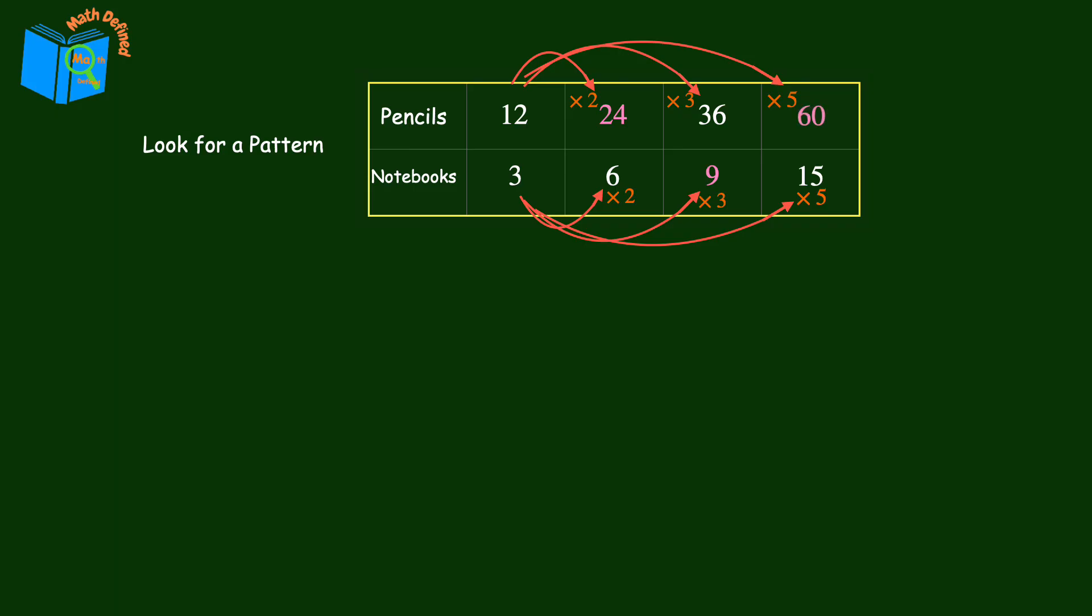The pattern in this table was pretty easy to see, but sometimes looking for a pattern can be confusing and frustrating. When this happens, you have another option. You can find the value of the ratio. Ratios are a comparison of two quantities using division. So to find the value of any ratio, you just divide the first quantity by the second one.